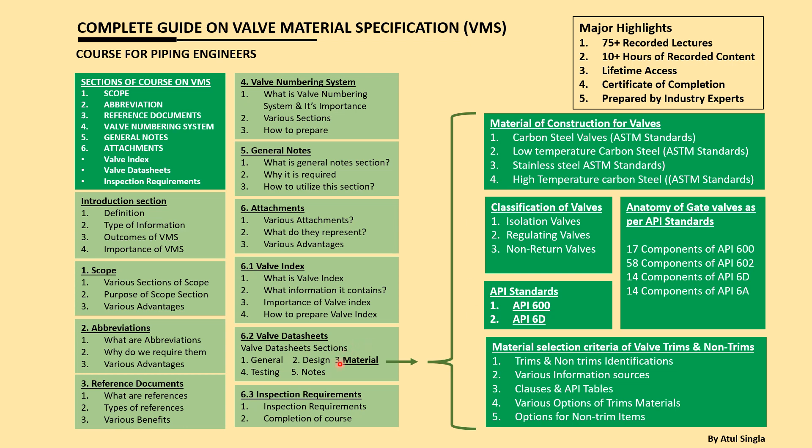Once we know all these things, we'll be able to fill the material section. Then we'll look at the testing section of the data sheet — what various items we need to fill and where we get the information. API 598 is the main standard, so we'll look into its various testing requirements: what kind of pressure is required, for what duration the testing is done, and for what components those tests are performed.